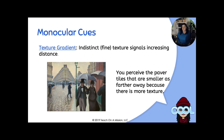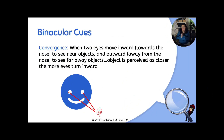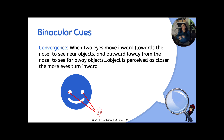Next up is convergence. Convergence is when two eyes move inwards towards the nose to see near objects and outward and away from the nose to see far-away objects. The object is perceived as closer the more the eyes turn inwards. Just try it out yourself. If you're looking at a flower in front of you, you're going to look down at the tip of your nose the closer it is; if it's further away, you're going to look upwards and out.